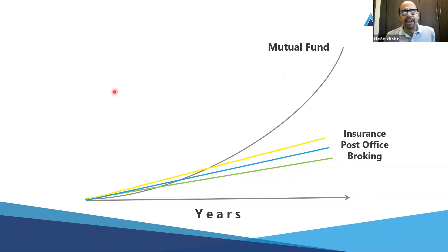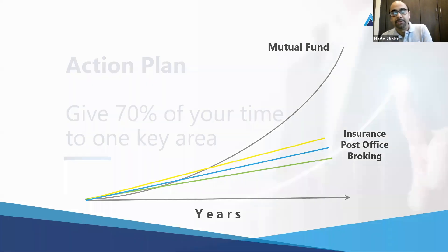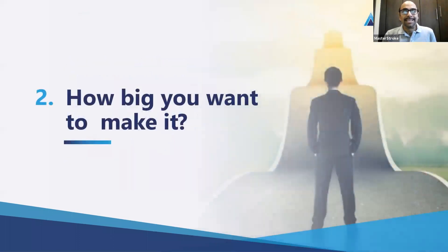There could be other financial products like real estate consultancy, international investments, NRI consultation, or PMS — you can add as many products as you want. But you have to choose one main area. If you have chosen mutual fund distribution as your first opportunity and first option, please keep in mind that you have to give 70 percent of your time to that area — 70 percent, it could be 80, but not below 70. That is my first step.